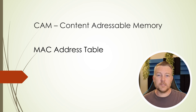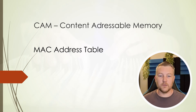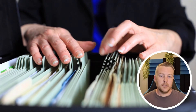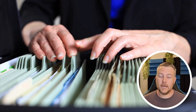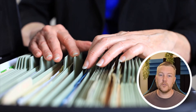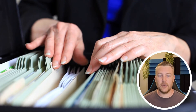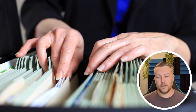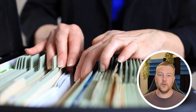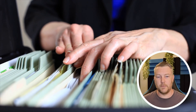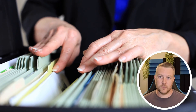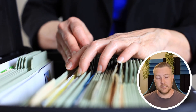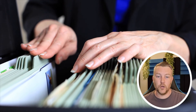The CAM itself is very simple. It stores MAC addresses and it can be searched for any entry and return either a true or a false value, depending on whether the value being searched for exists in that table or not.